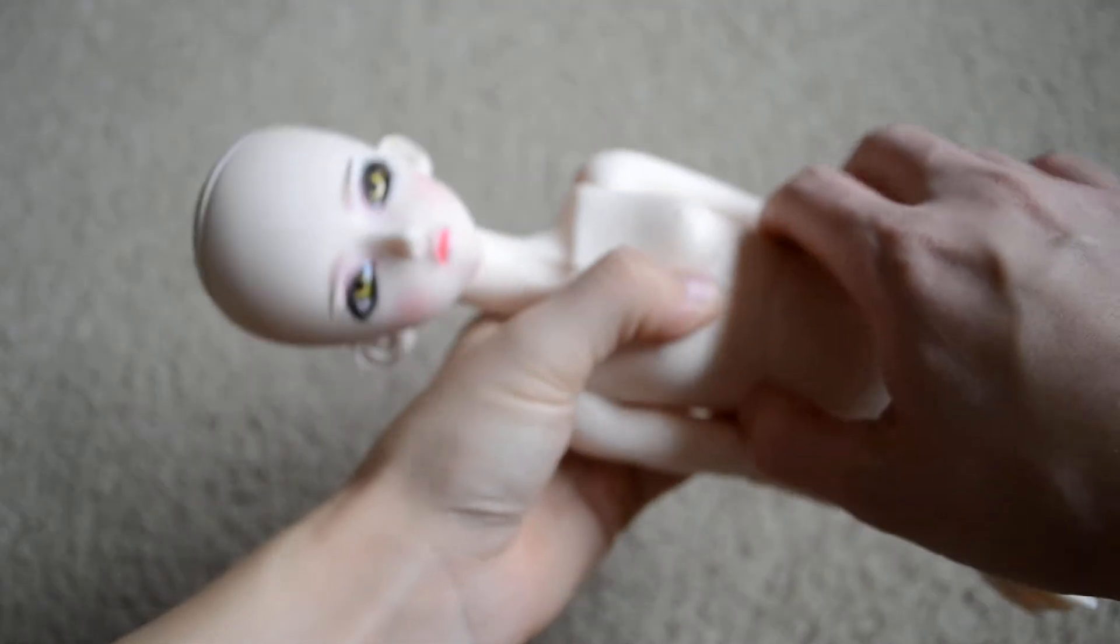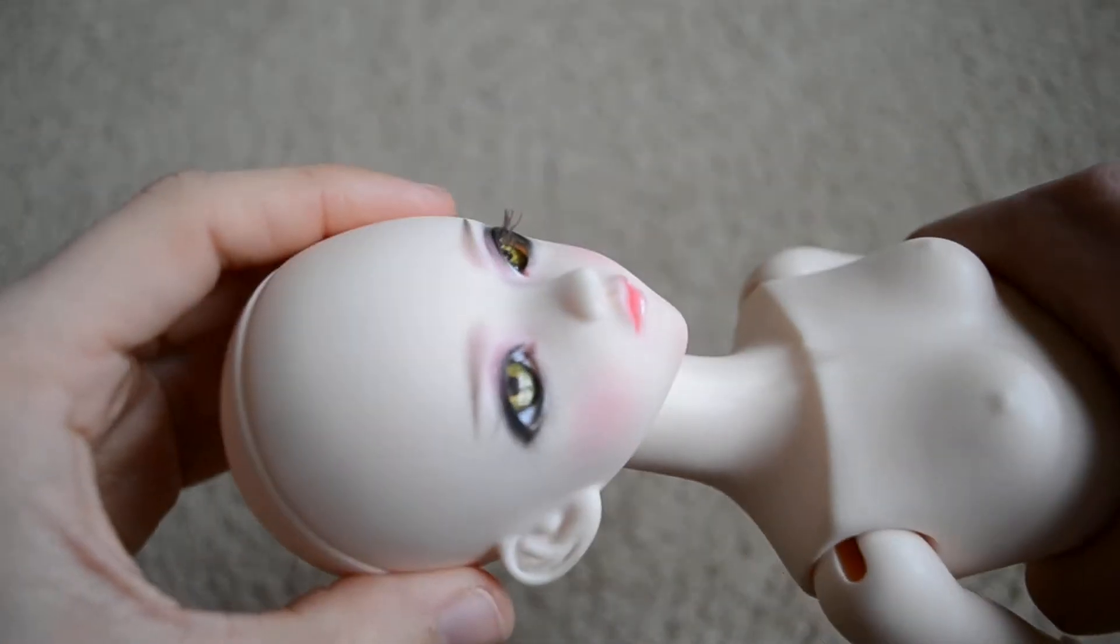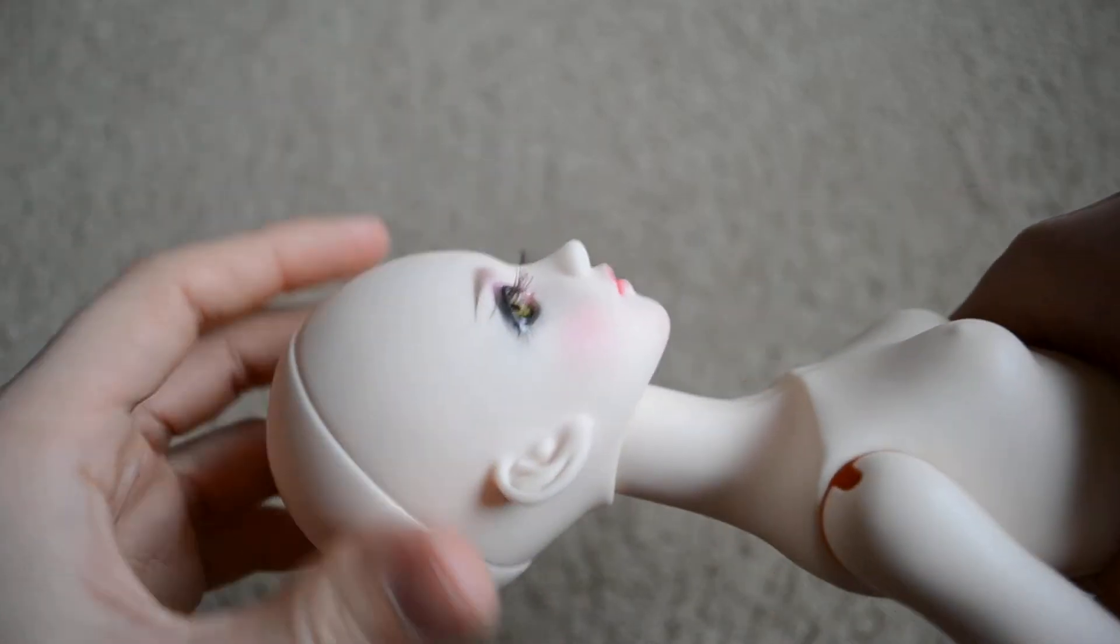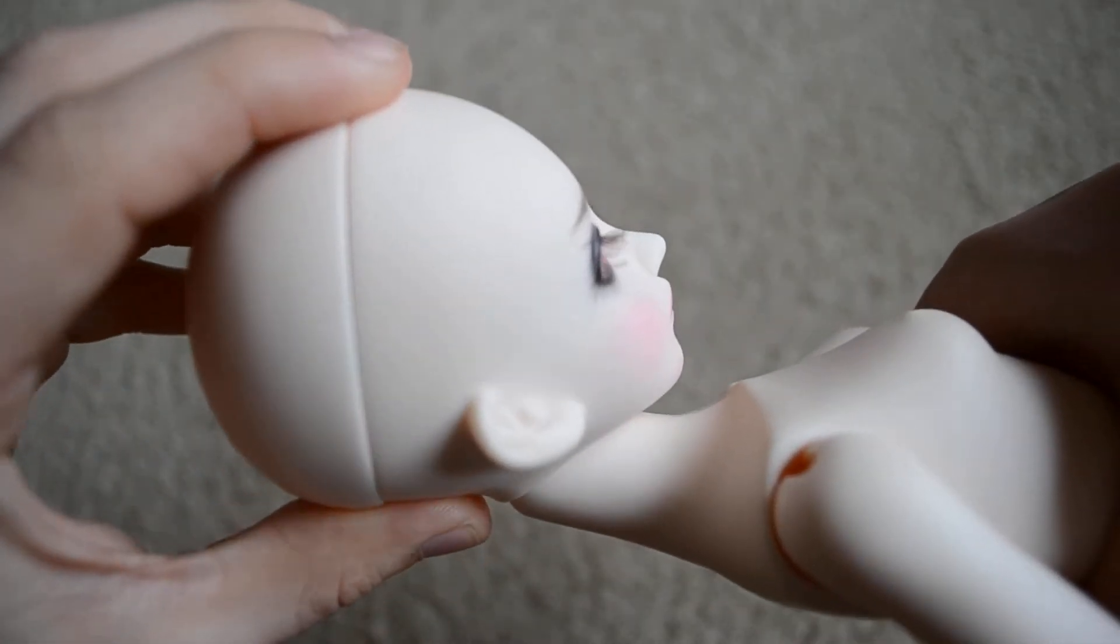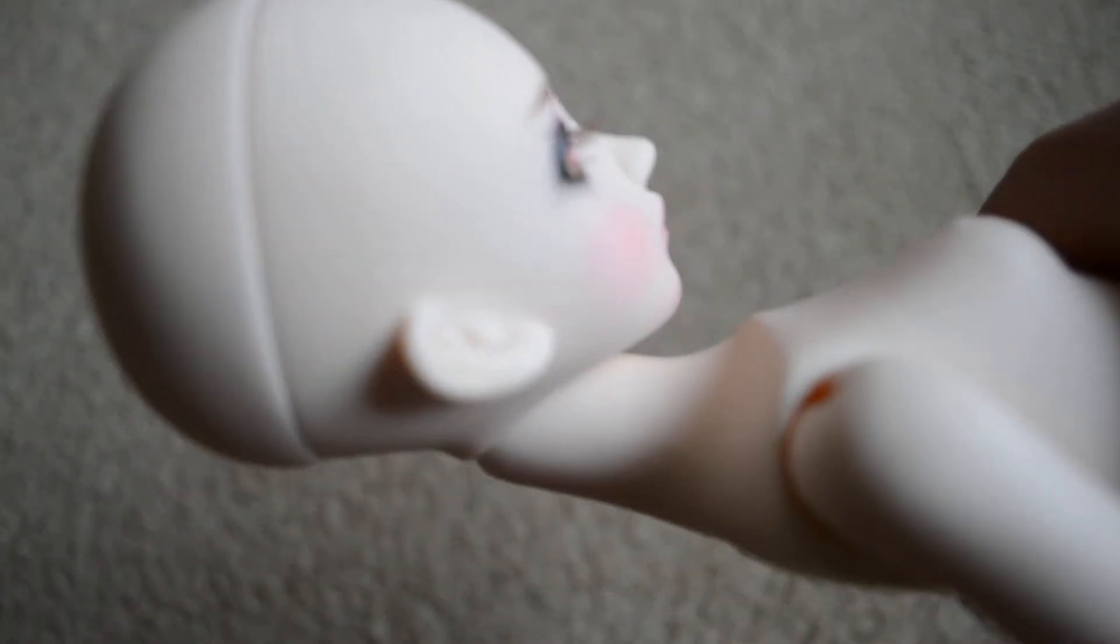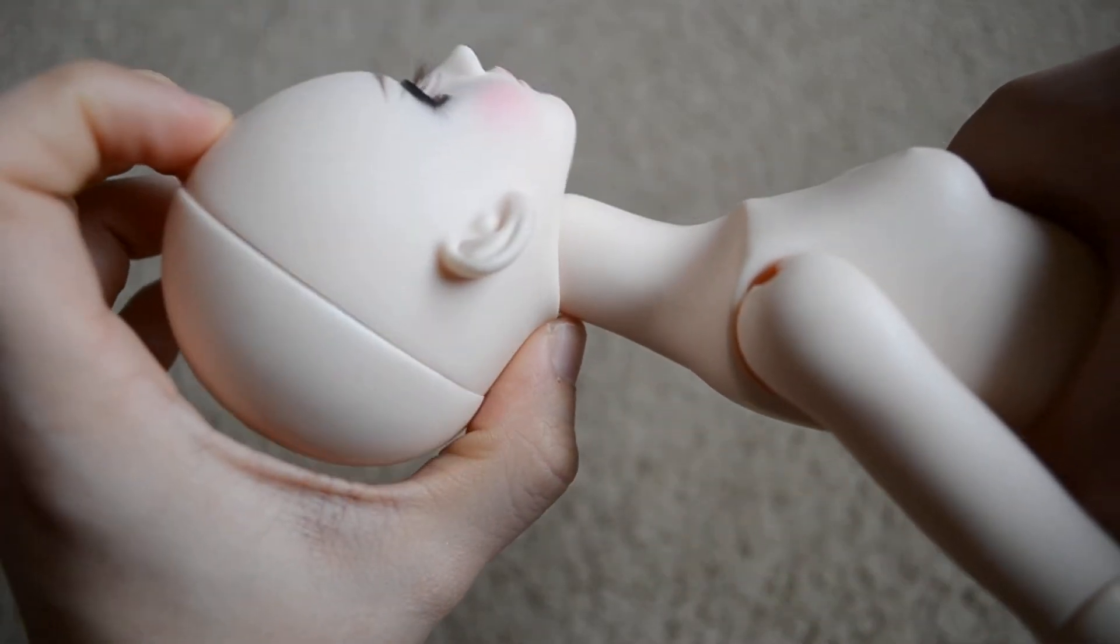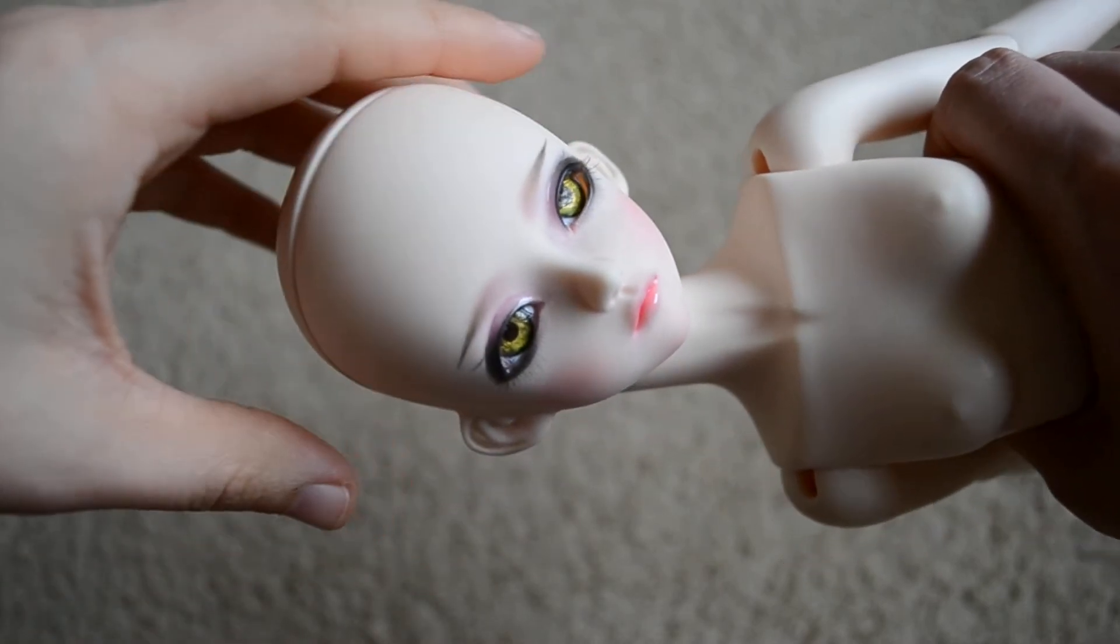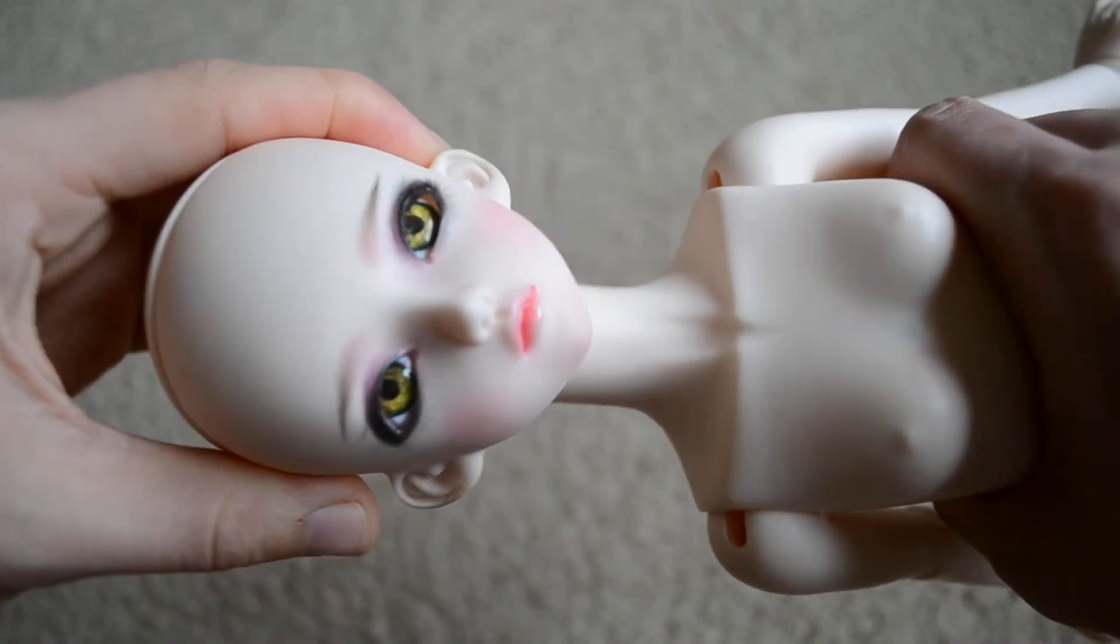I went ahead and sueded her neck because even though her stringing is excellent, her head just kind of wanted to flop around to keep it straight where I wanted it. So she can move her head really far forward, can't really move it back. But she can move it side to side very well. So she has pretty good range there.